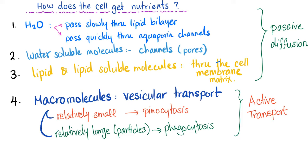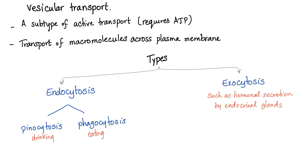Macromolecules need vesicular transport. If they are relatively small, the process is called pinocytosis. If they are relatively large particles, we need phagocytosis. Pinocytosis is a passive transport which doesn't require energy, while phagocytosis is an active transport that does require energy. Vesicular transport is a subtype of active transport and requires energy.